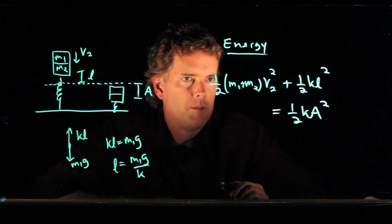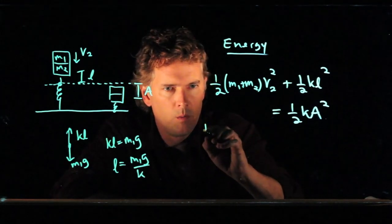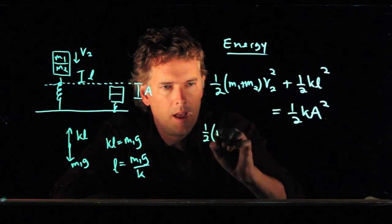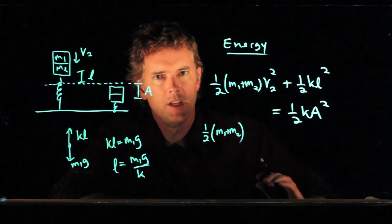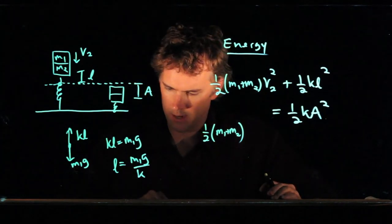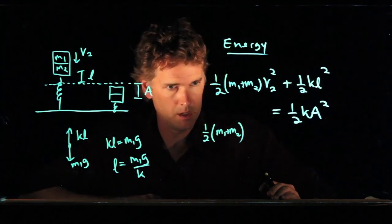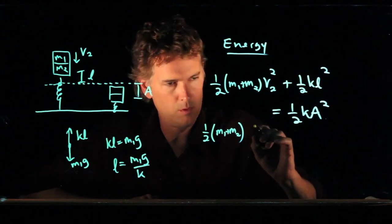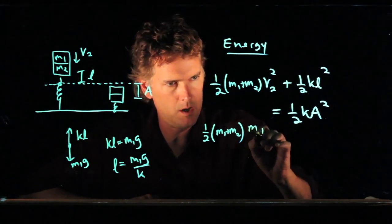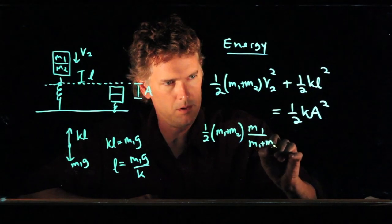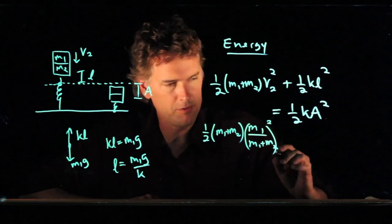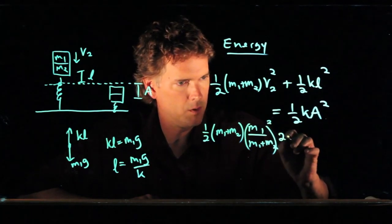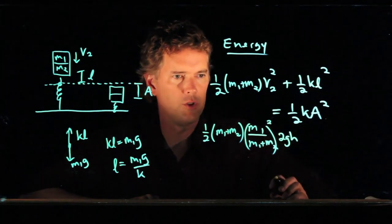So what does our equation become? We have one half M1 plus M2 times V2 squared. And if we remember from just a minute ago, V2 was equal to M1 over M1 plus M2. We're going to square all that. And then we had a square root of 2GH that we're going to square, so that just becomes 2GH.